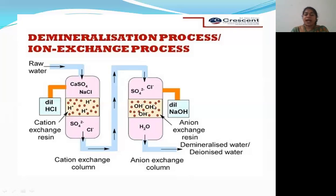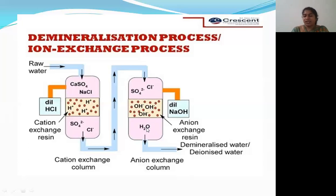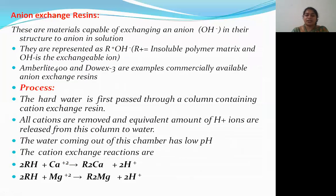This treated water is then passed through the anion exchange column. The anion exchange resin exchanges its OH⁻ ions with the anions present in the water — sulfates, chlorides, and nitrates. After this exchange, the water contains only H⁺ ions and OH⁻ ions, which combine to form water. Finally, we get demineralized water or deionized water.